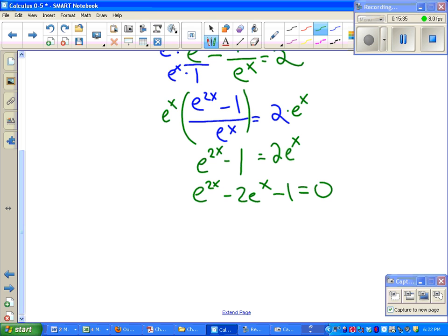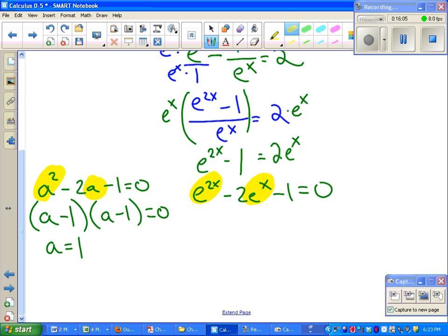The superstars in the group probably said, oh, that looks like quadratic form. This looks very similar to a^2 - 2a - 1 = 0, which I know how to solve: a - 1, a - 1 = 0, a = 1. Except I don't have a in this problem. I have e^x. This is called quadratic form. And instead of a^2, I have (e^x)^2. Side note, e^(2x) is the same thing as (e^x)^2, using some Algebra 1 rules. So this is quadratic form. And when I go through those same steps, I would get something like e^x = 1.